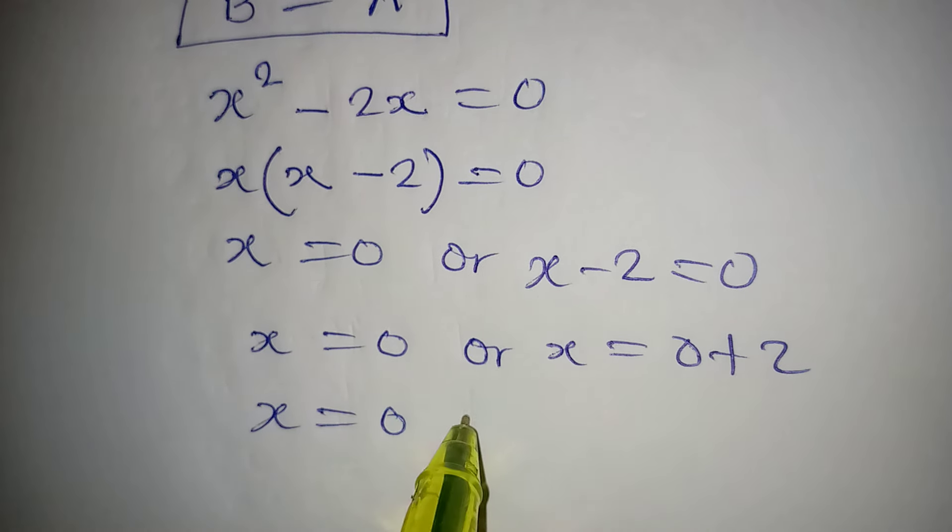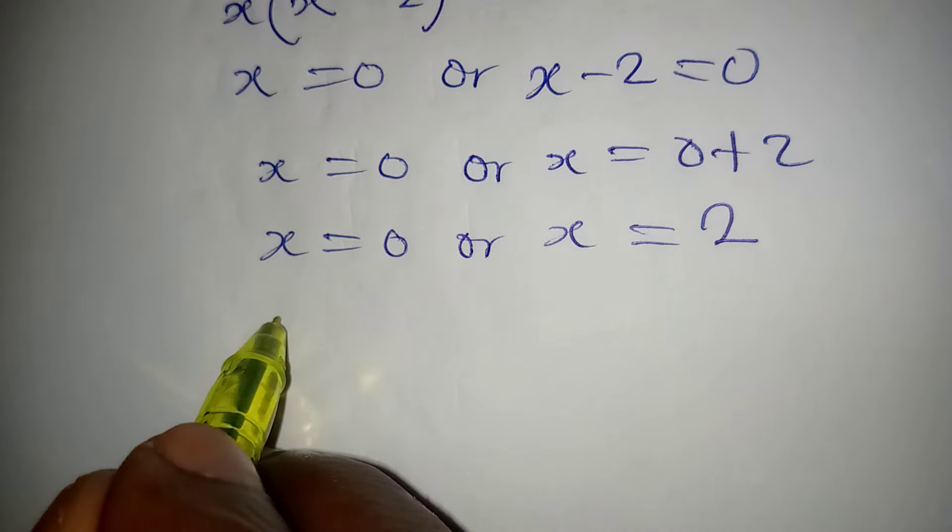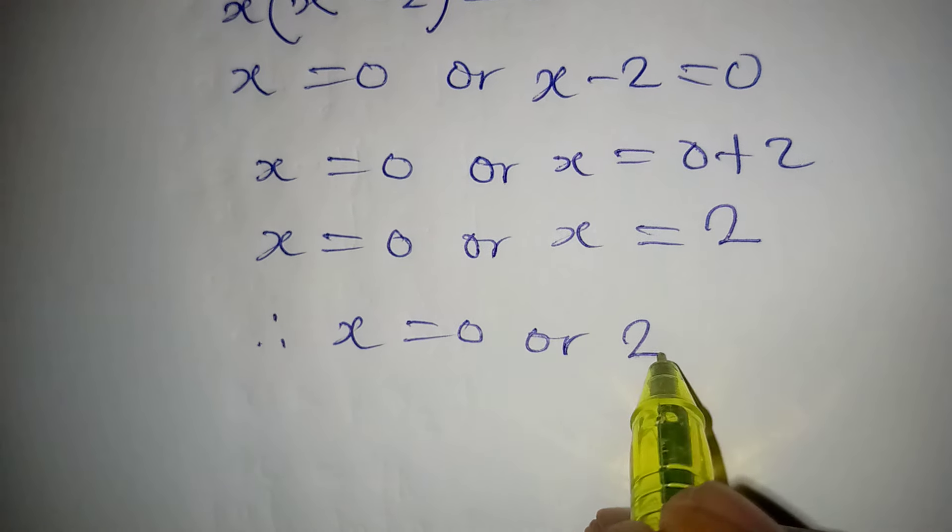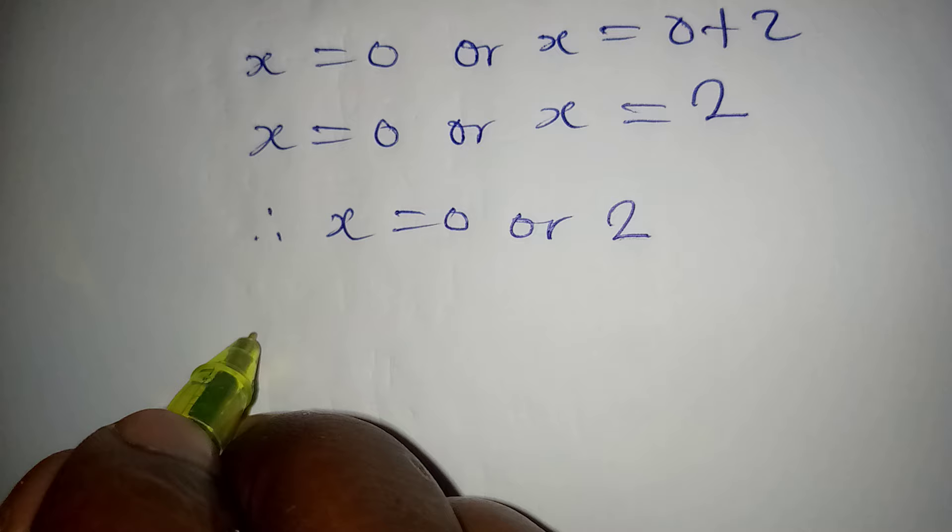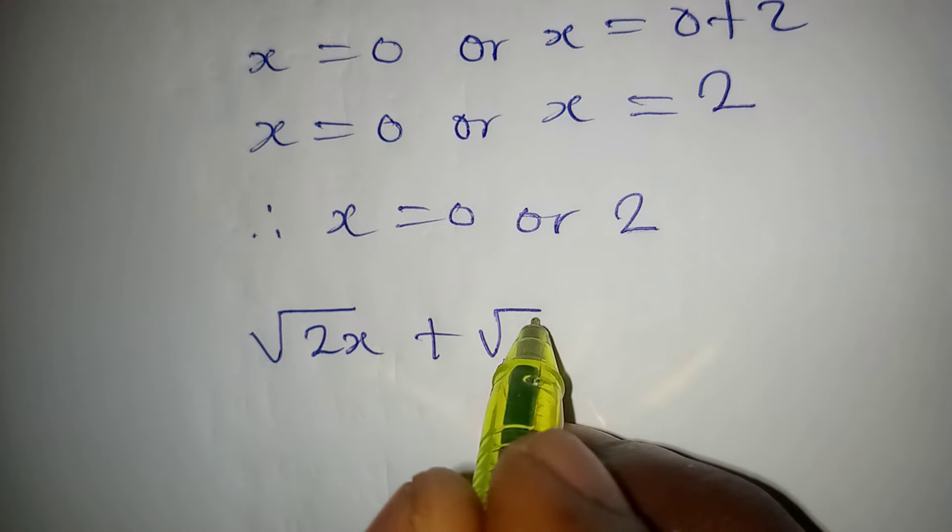We can conclude that x is zero or two. But then let's put this back and check. We have square root of 2x plus square root of 2x equal to 2x.